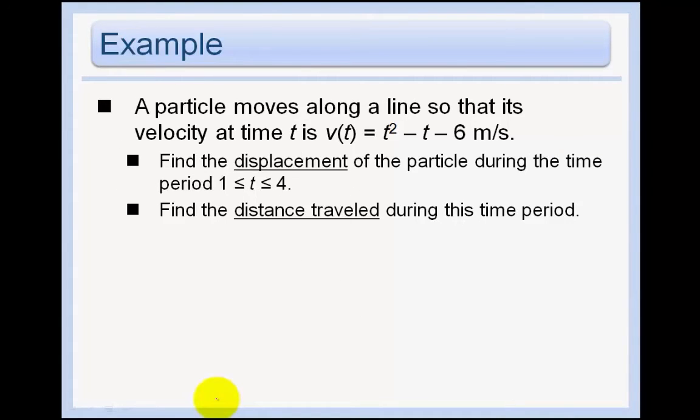So an example here would be a particle moves along a line, here's the velocity, find the displacement. So the displacement is just simple, the antiderivative of the velocity. And so that is just going to be antiderivative of t squared is 1/3 t cubed minus 1/2 t squared minus 6t. Evaluate that between 1 and 4.